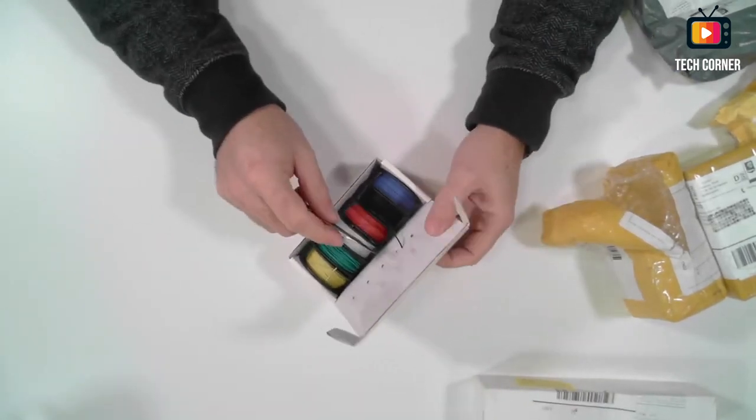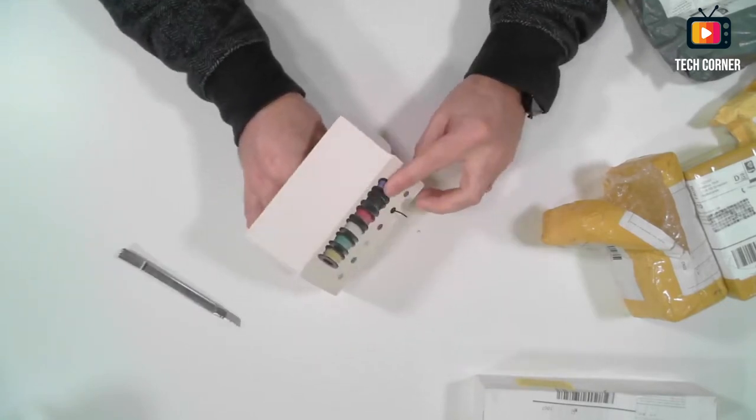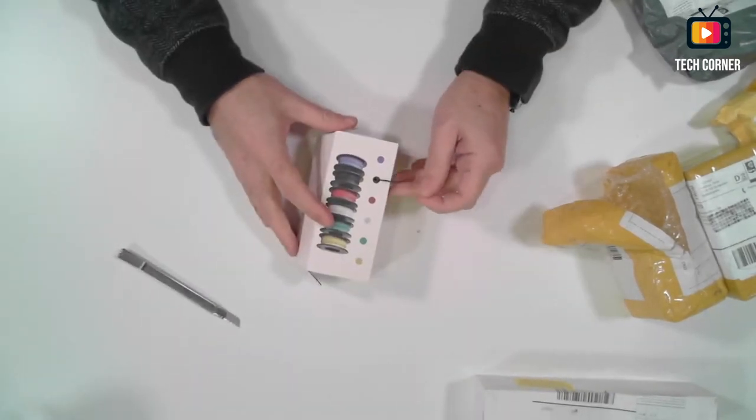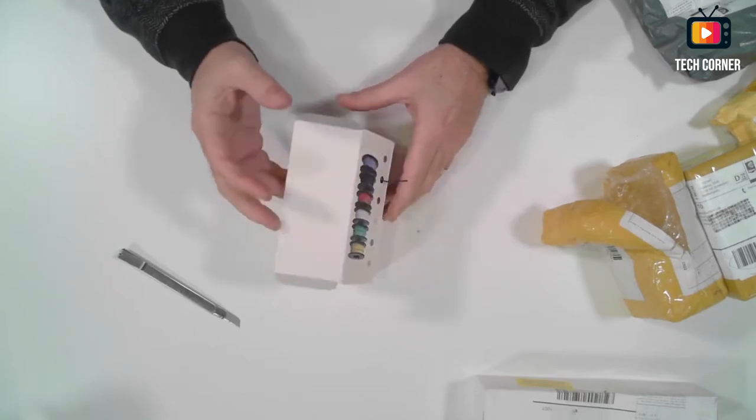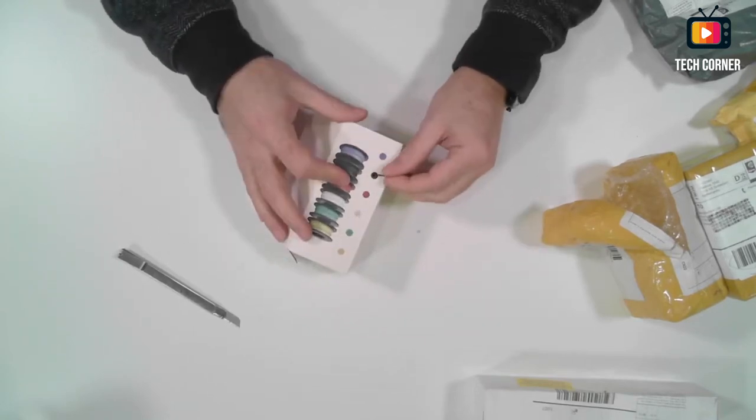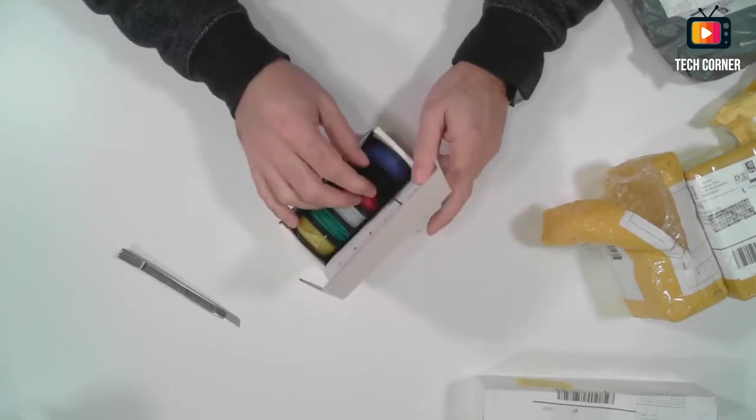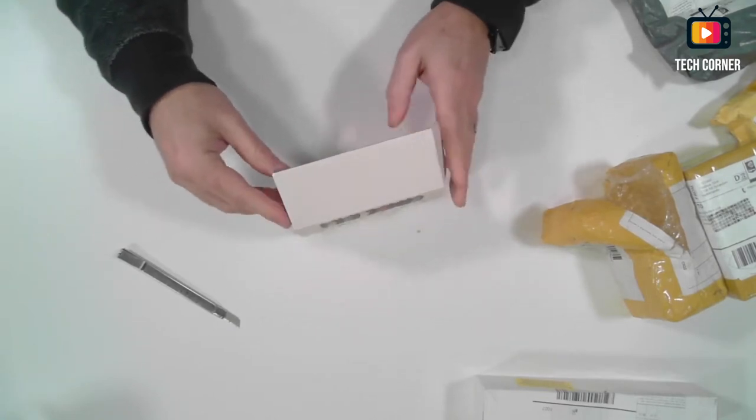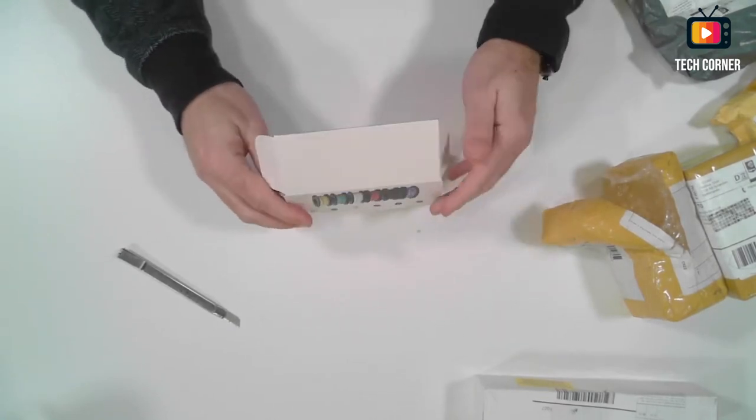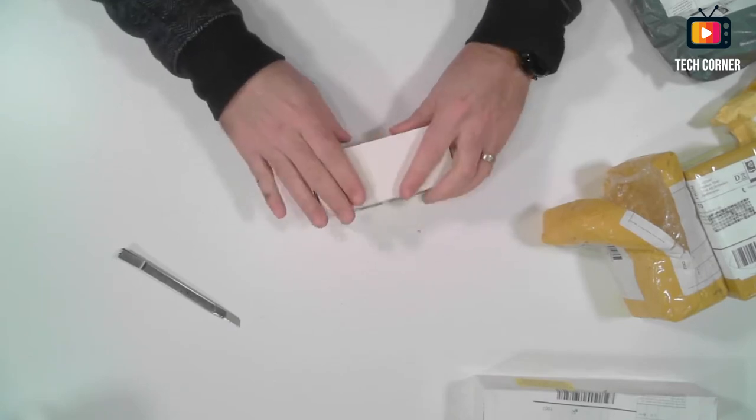The box has small holes where you can pass the wire. Like this. And we don't have to take the roll out. You can just pull the wire. And it's always kept secure inside the box. Nice one.